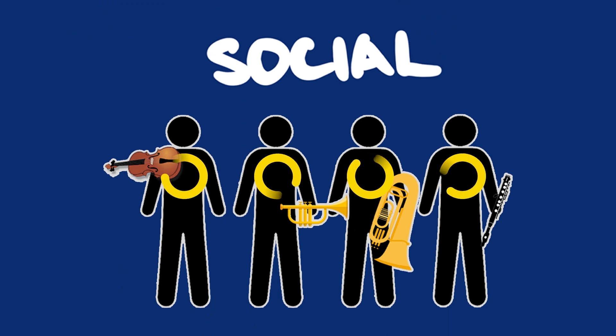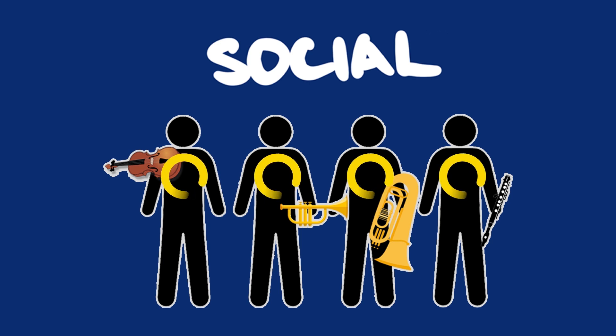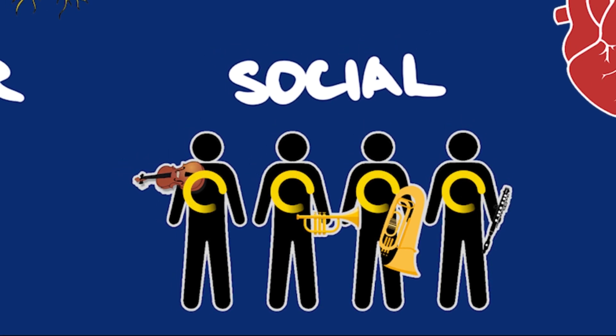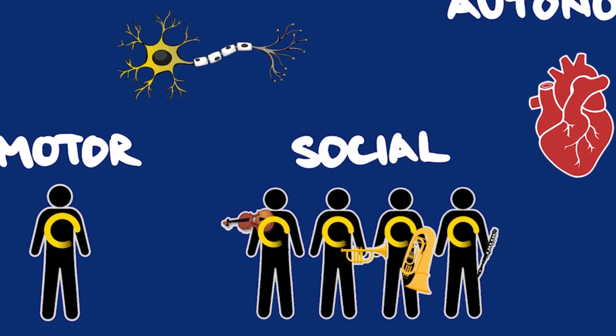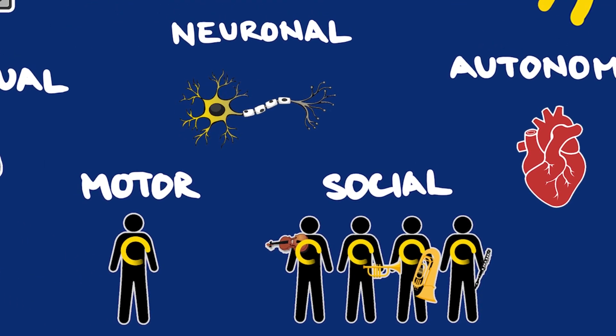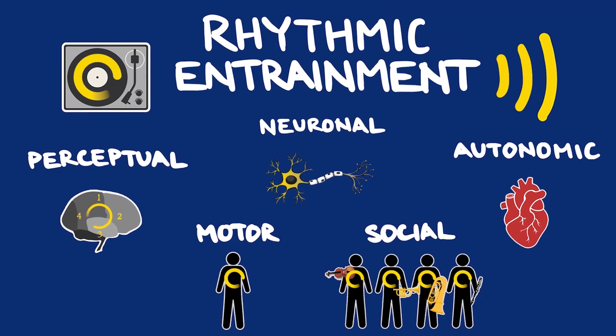The fifth level, social entrainment, involves our ability to entrain to the cycles of other people. For musicians, this is how we synchronize with each other in a group or band. In fact, non-musicians socially entrain to others every single day in the form of conversation. Rhythmic entrainment is not only musical — it's a mental process present in walking, talking, and many other functions of daily life.